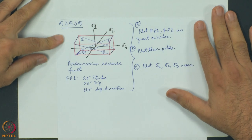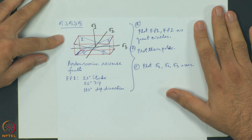We are now going to see the Andersonian faults and how they plot in the stereonet. I will be explaining slowly and covering the basics of stereonet plotting also in the process so that all students can understand.